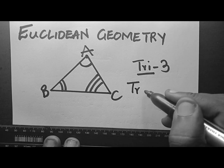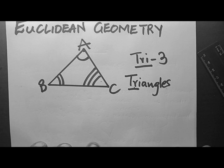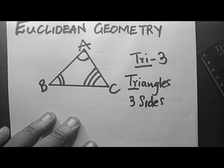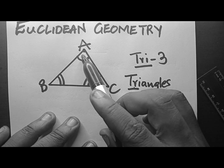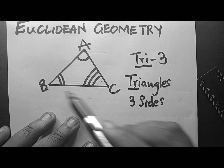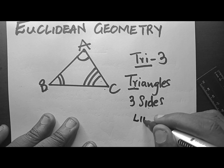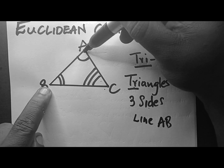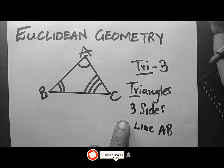That's why we call this 'tri-angles' — we have 3 angles. We also have 3 sides. Let me repeat: we have 3 angles and we have 3 sides — sides AB, BC, and AC. Remember, that's how they name lines: line AB means the line from A to B, line BC means from B to C, line AC means from A to C.